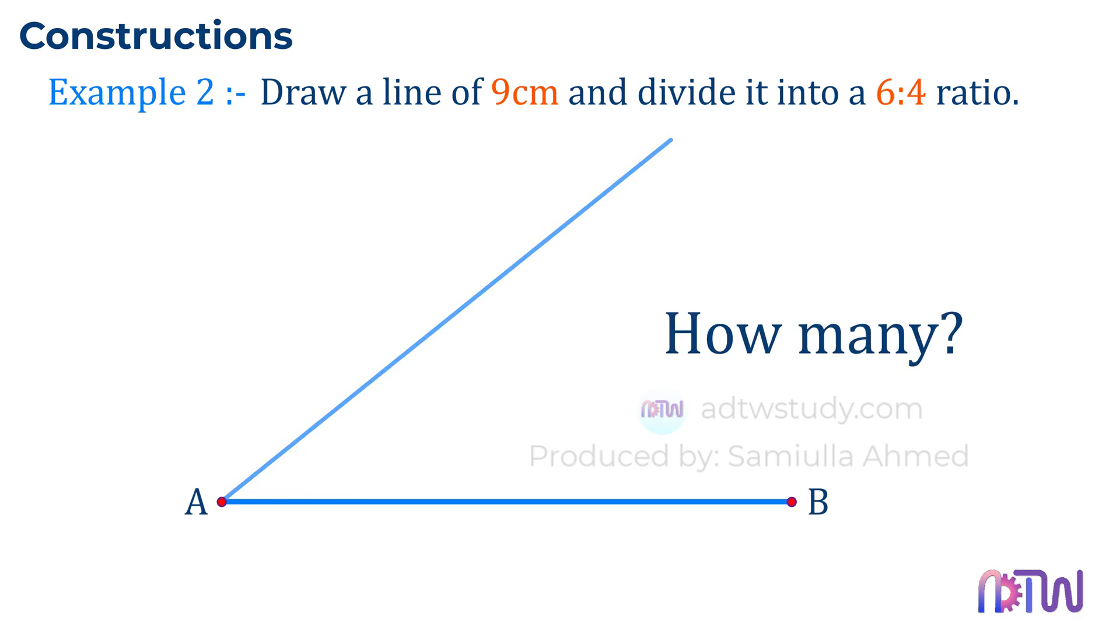After this, we need to divide this inclined line into an equal number of parts. But how many? To get this number, add the given ratio: 6 plus 4, which equals 10. So we will divide this inclined line into 10 equal parts. Take a compass, adjust it to some length, and cut the inclined line into an equal number of parts as shown.